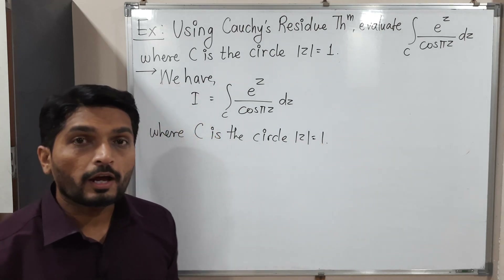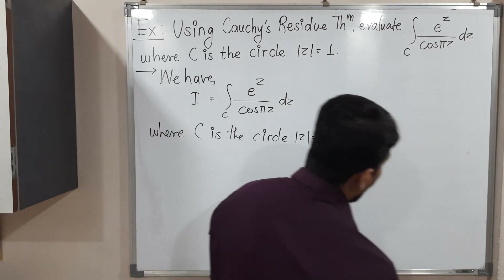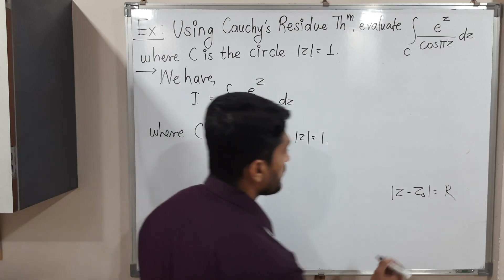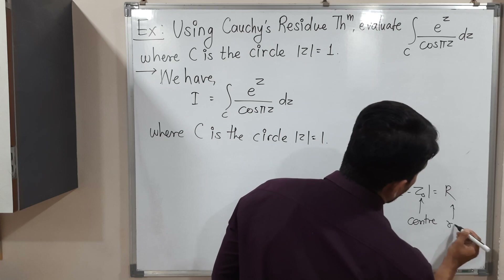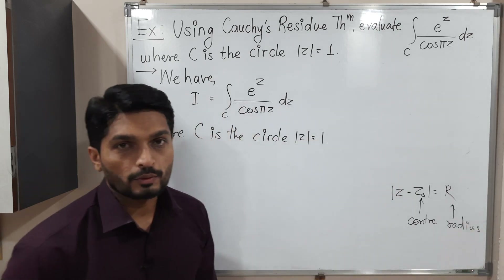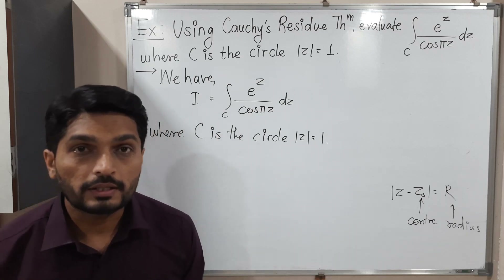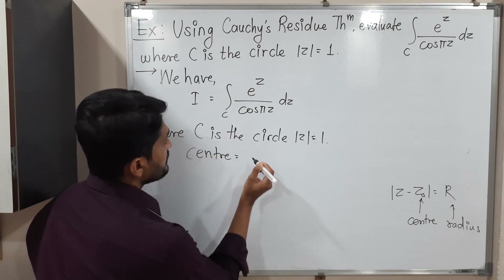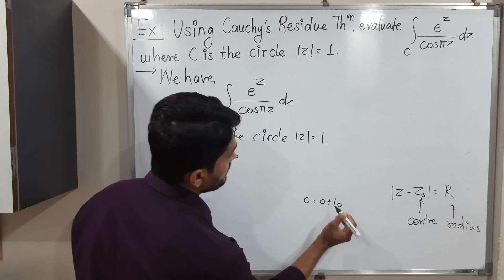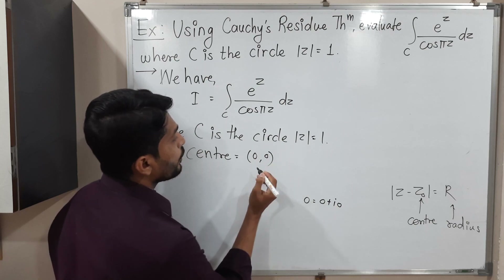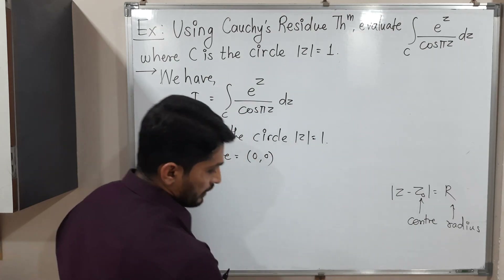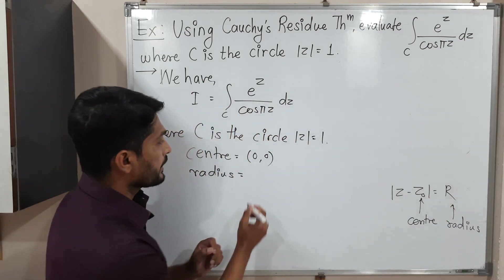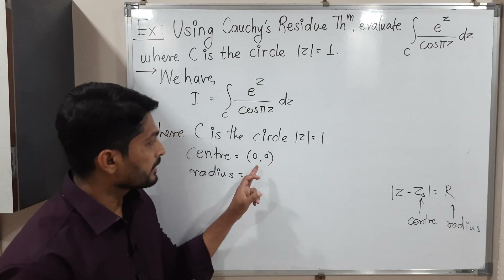To draw this circle we need to have the center and radius. So I am going to compare the given equation with the standard equation of a circle, where Z naught is the center and R is the radius. Here we only have mod Z, meaning Z naught is not present, so Z naught is 0. The center is 0, meaning real part 0, imaginary part 0.